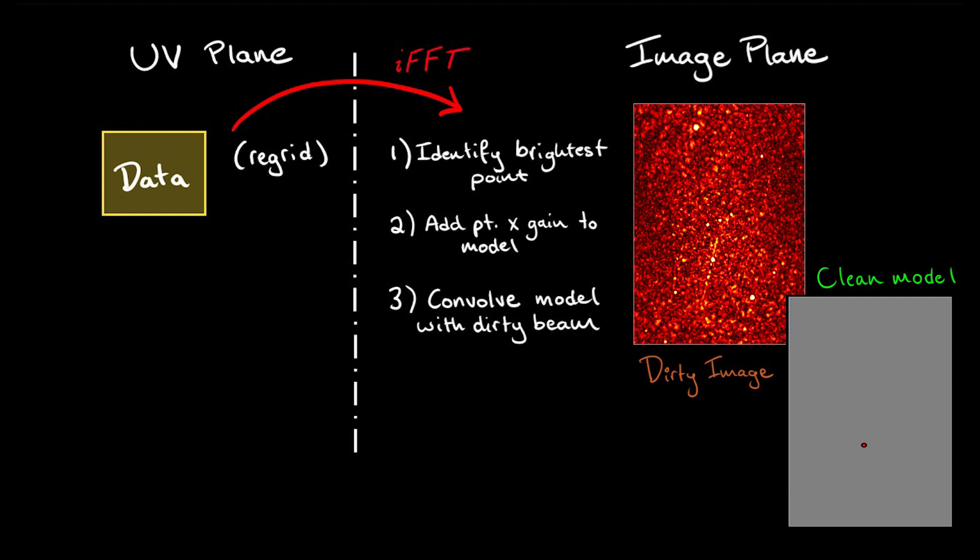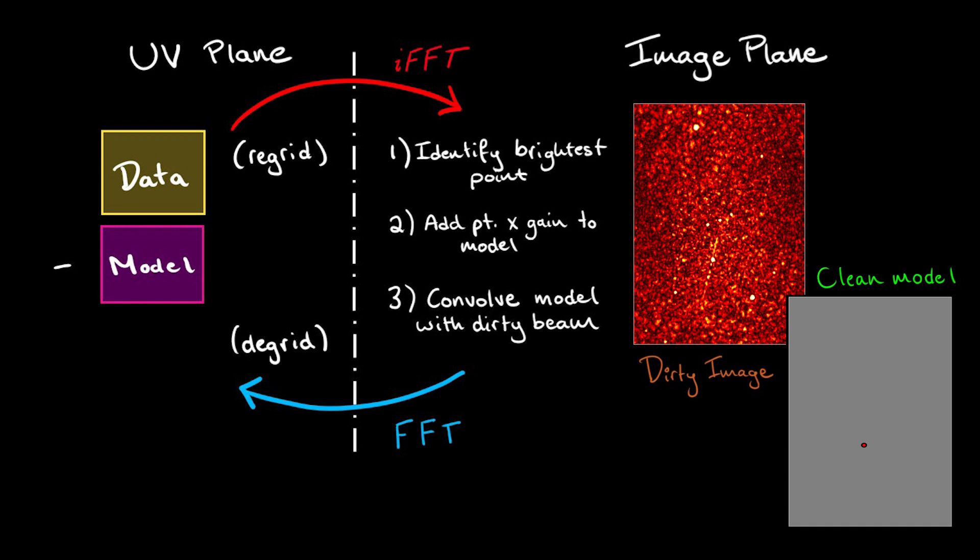For this reason, to remove the component, we would ideally do a Fourier transform of our model, subtract it from our UV data, and generate a new image called the residual.